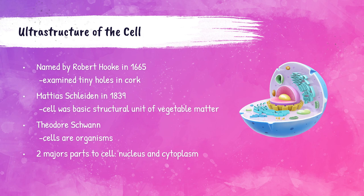In 1838, a man named Matthias Schleiden determined that the cell was the basic structural unit of vegetable matter — he was actually a botanist, which is why he declared it in vegetable matter. The following year, a man named Theodore Schwann determined that cells were organisms and that they made up animals and plants.